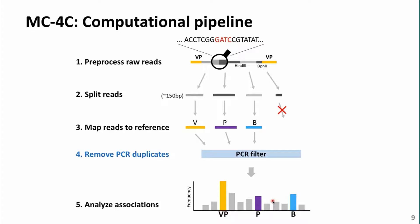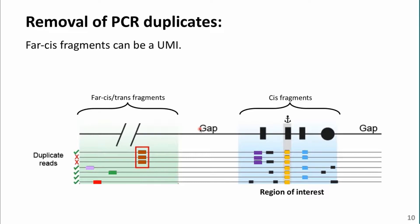Diving into the computational side of MC4C: first, we process the raw reads into the fragments they contain and map them to the reference genome — ending up with a viewpoint fragment, a purple fragment, and a blue fragment representing, for example, two enhancers and one gene. Then we remove PCR duplicates. We exploited the fact that trans fragments are very unlikely to be captured multiple times in different nuclei. If a single fragment mapped in the far cis region appears multiple times in our dataset, we conclude those reads are duplicates — we keep one and remove others.